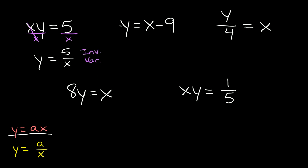What about this one? We have y is equal to x minus 9. We already have it solved for y, and here we have x minus some number. This doesn't show any multiplication or division, so this would actually be neither.